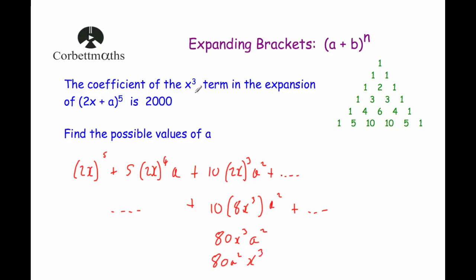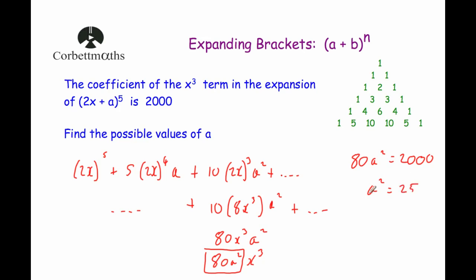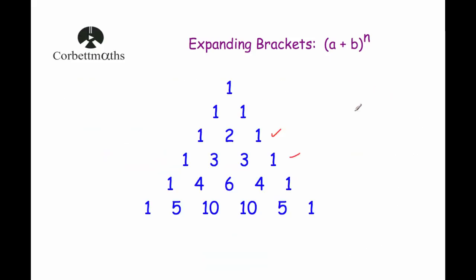The question tells us the coefficient of x cubed is 2000, so 80a squared equals 2000. Dividing both sides by 80 gives a squared equals 25. Since a squared equals 25, a equals positive or negative 5. So the possible values for a are a = −5 or a = 5. Pascal's triangle can be very useful to help you expand brackets quickly and easily.